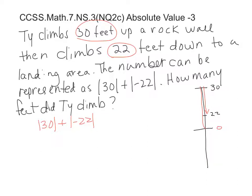Well, he went up 30, and the absolute value of that would be, the distance between 0 and 30 would be 30, plus the absolute value of negative 22 would be 22.